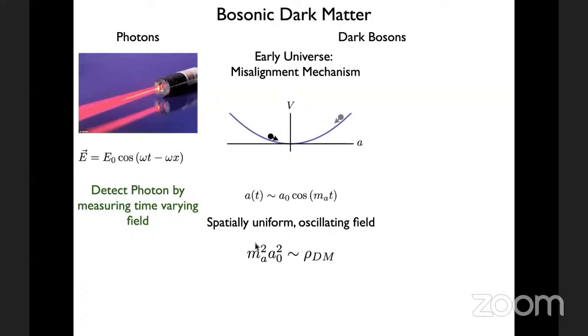In the very early universe, we think the dark matter is homogeneous, with one value around the entire universe, oscillating back and forth at a frequency equal to its mass.